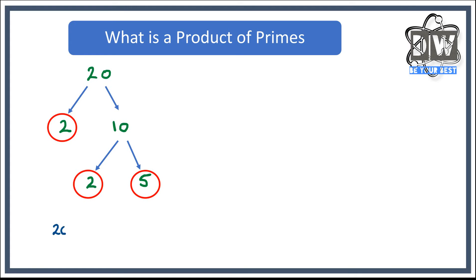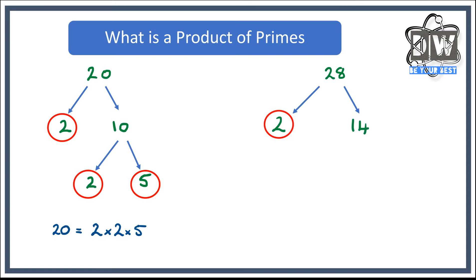So I can write that down: 20 equals 2 times 2 times 5. I would leave it in this form rather than index form for these examples. Now let's look at 28. 2 is a factor of 28, so 2 times 14 — 2 is prime, 14 is not. Then 2 times 7 gives me 14, and they're both prime, so I'm finished. 28 equals 2 times 2 times 7.